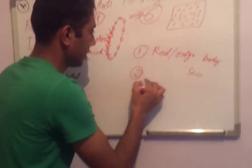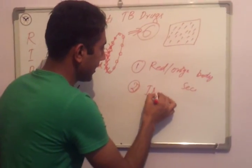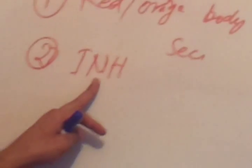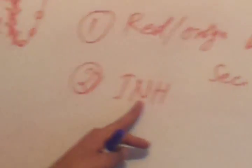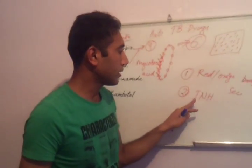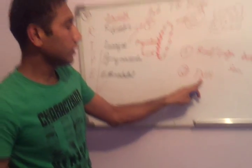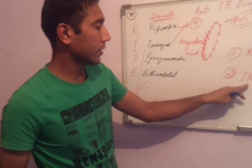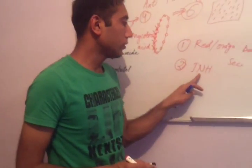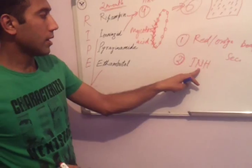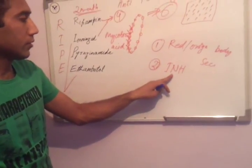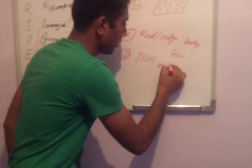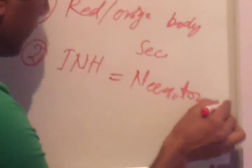The side effect of isoniazid is neurotoxicity. This drug produces neurotoxicity because isoniazid decreases absorption of vitamin B6 (pyridoxine) and also increases the loss of vitamin B6 from the body in urine. The result is neurotoxicity.